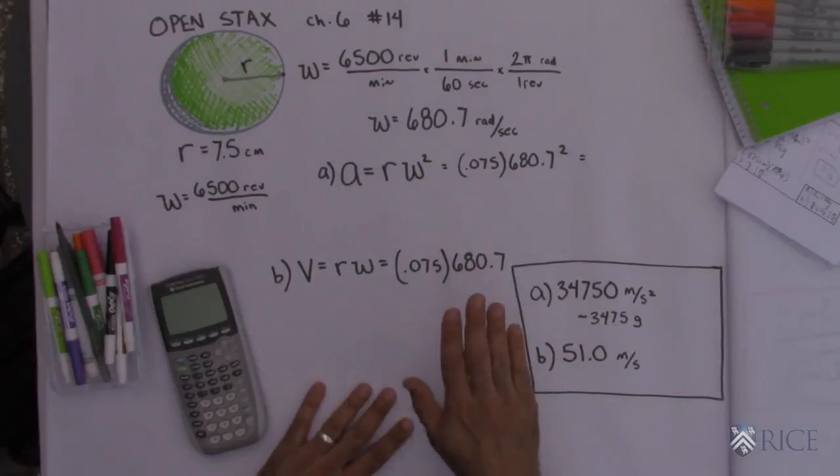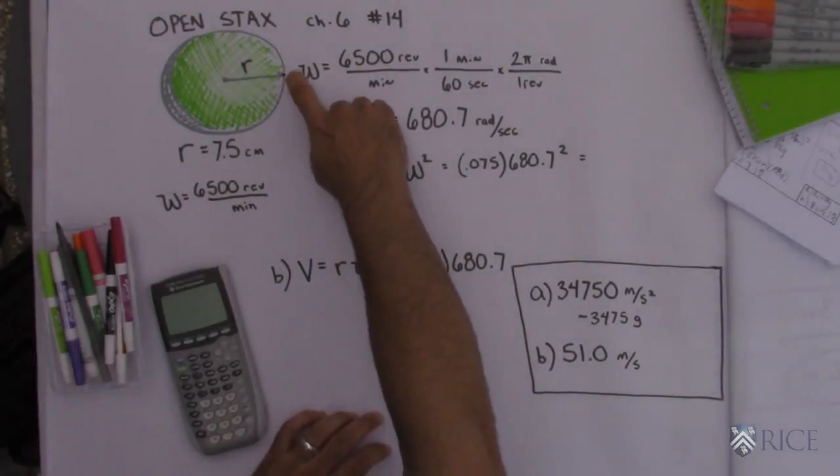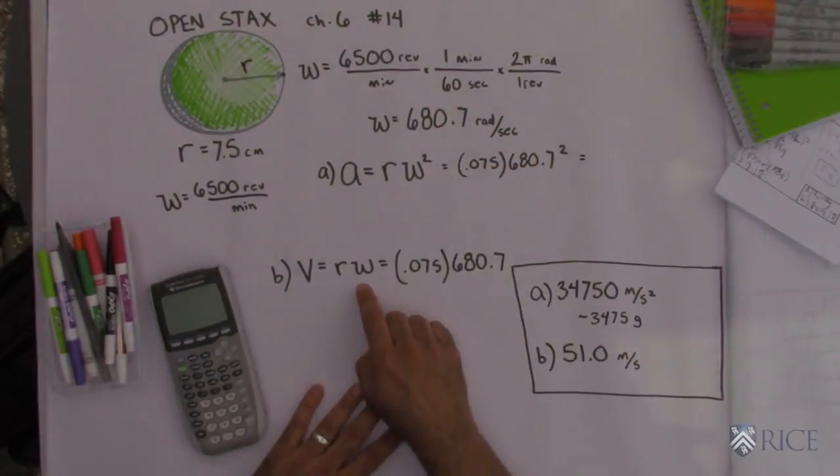Part B, we needed to find the linear speed, also known as tangential speed, of a point on the edge. So to convert angular speed into linear speed, I said v is equal to r omega.